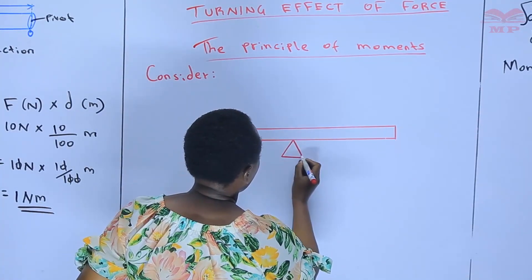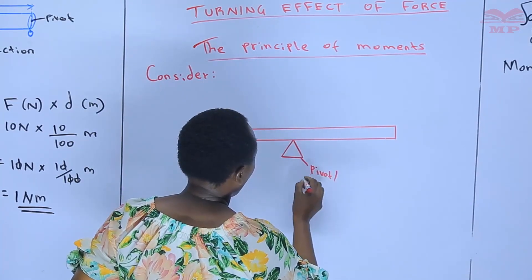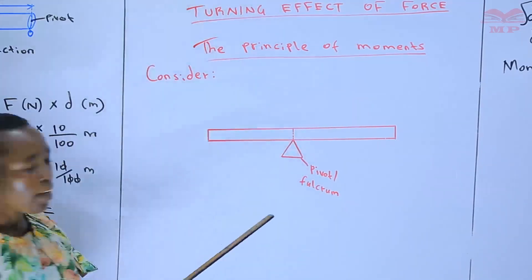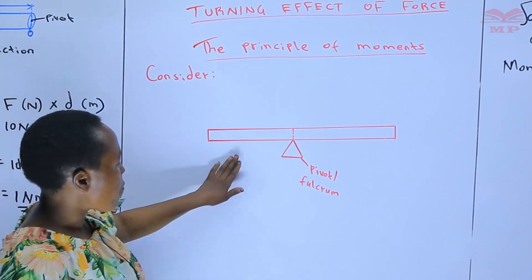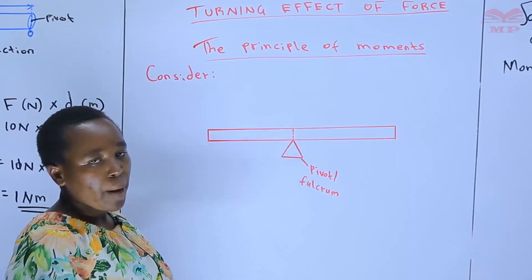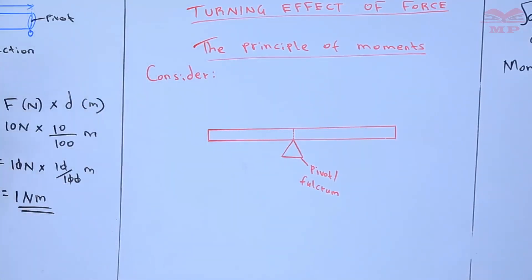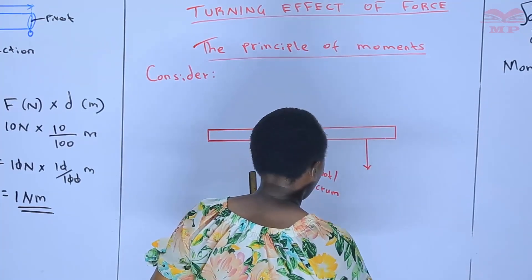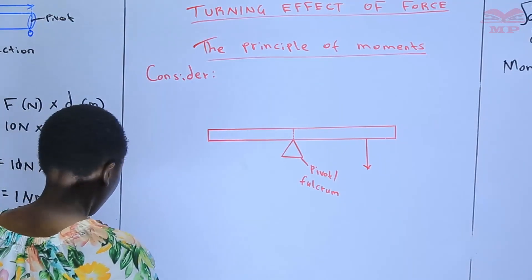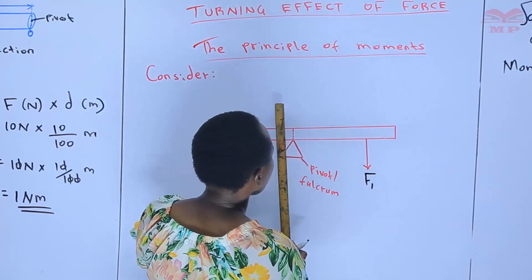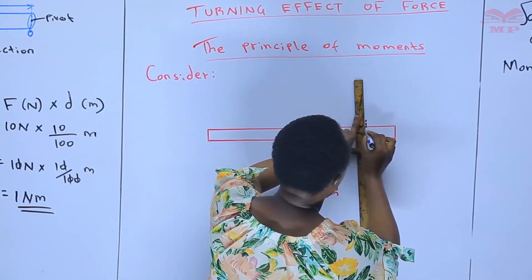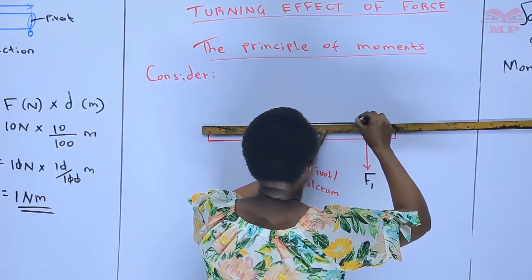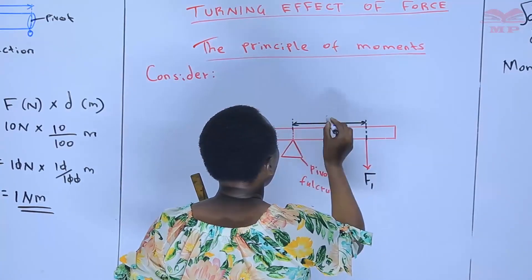There is a fixed point here. This is our pivot, which we are calling the fulcrum, at this point here. Now, we want to apply forces on all sides of this bar. We can start with a force at this point here. We can call this force F1. The distance from the pivot to force F1, we can call it D1. So if we have this distance, we can call it distance D1.